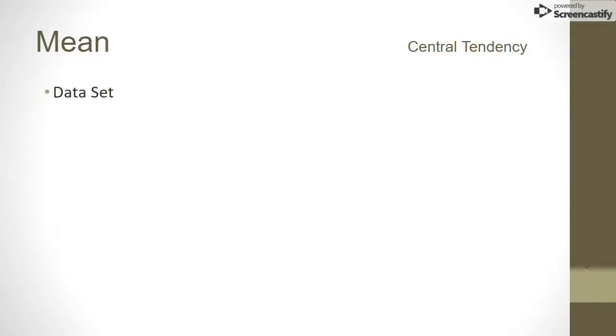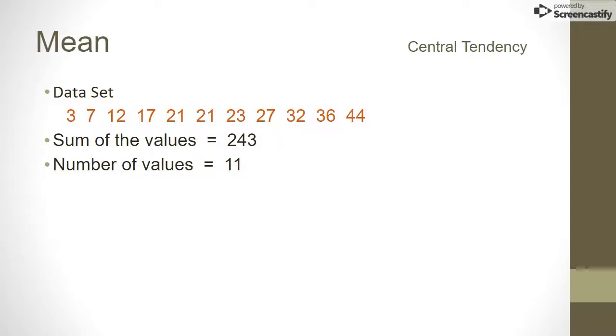Let's see an example. Here we have a data set of 11 measurements. Using our formula for finding the mean, first we have to add up all the numbers. That gives us a sum of 243. Next, we divide this number by the number of data values in the set, which is 11, and we find an answer of 22.09 repeating.